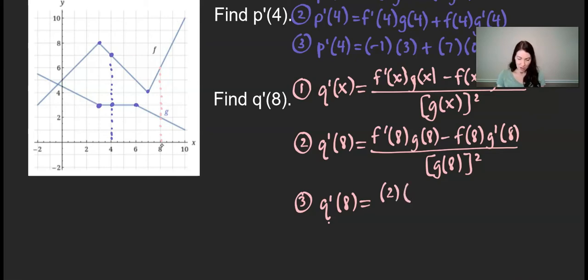g of 8 is going to be the value of the function g at an x value of 8, which appears to be 2. Oh, 2 as well. Alright, minus f of 8 would be the value of the f function at the x value of 8, which looks to be 6.